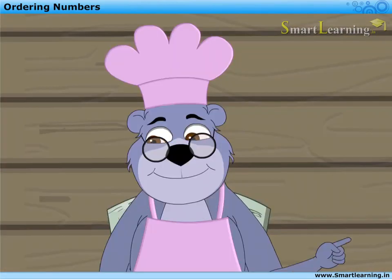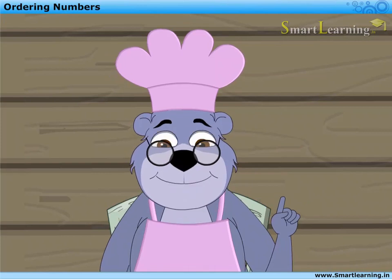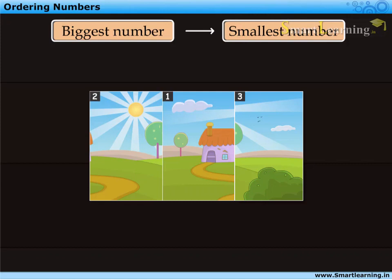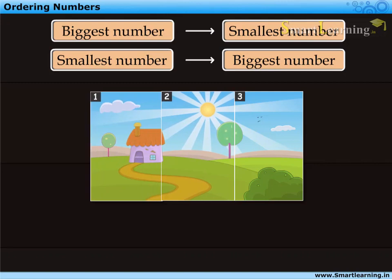Then, Mr. Bear gives them a clue. He tells Bunty and Cookie, observe the numbers written on the top left corner of each piece and arrange them in a proper order. That is, from the biggest to the smallest or from the smallest to the biggest.